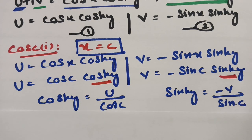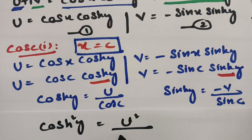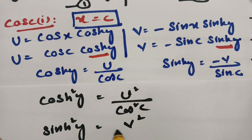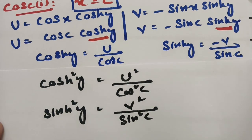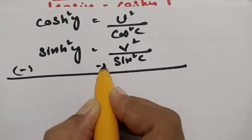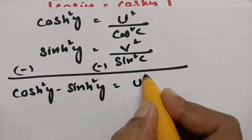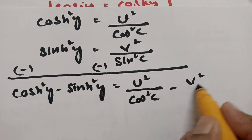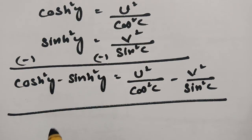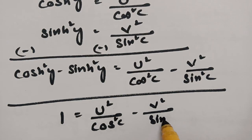Squaring both sides: cosh² Y equals U² / cos² C, and sinh² Y equals V² / sin² C. Subtracting, we get cosh² Y minus sinh² Y equals U² / cos² C minus V² / sin² C. Since cosh² Y minus sinh² Y equals 1, this becomes: U² / cos² C minus V² / sin² C equals 1.